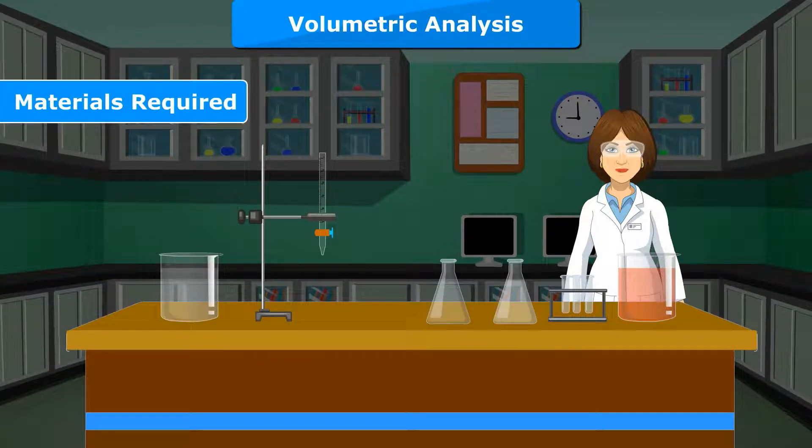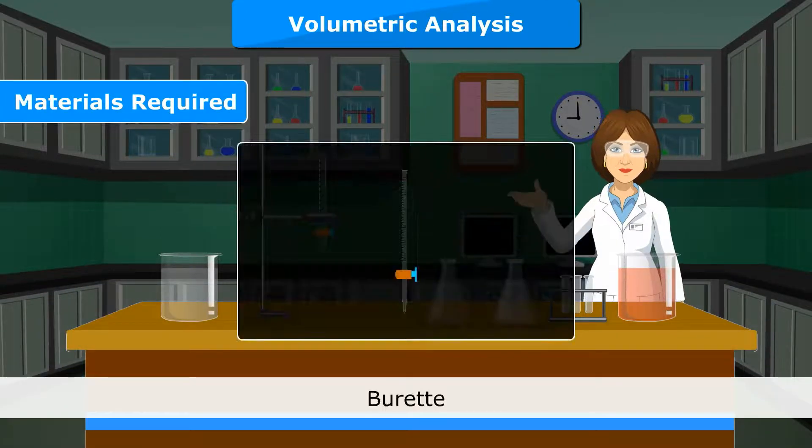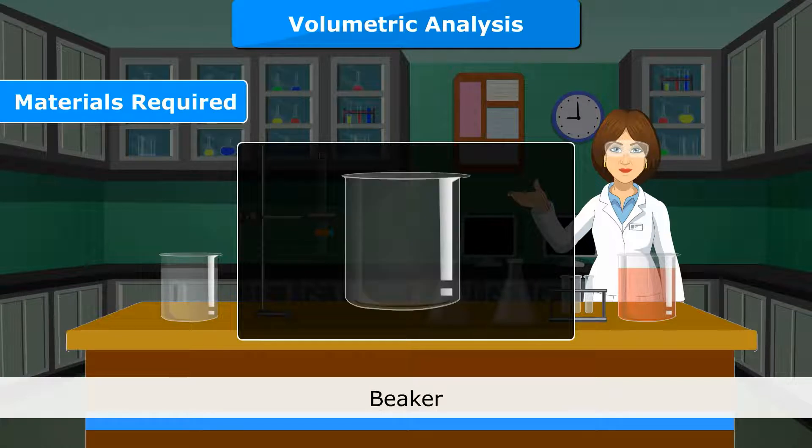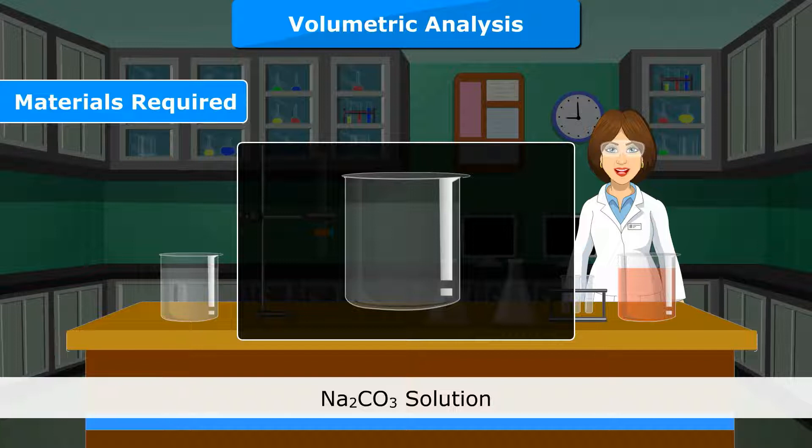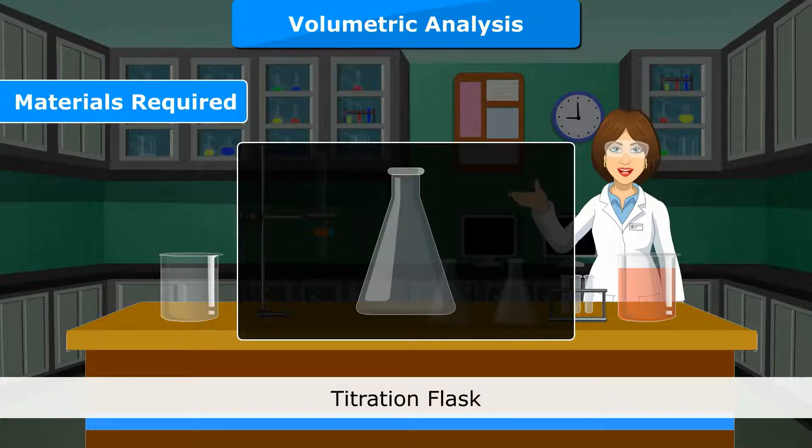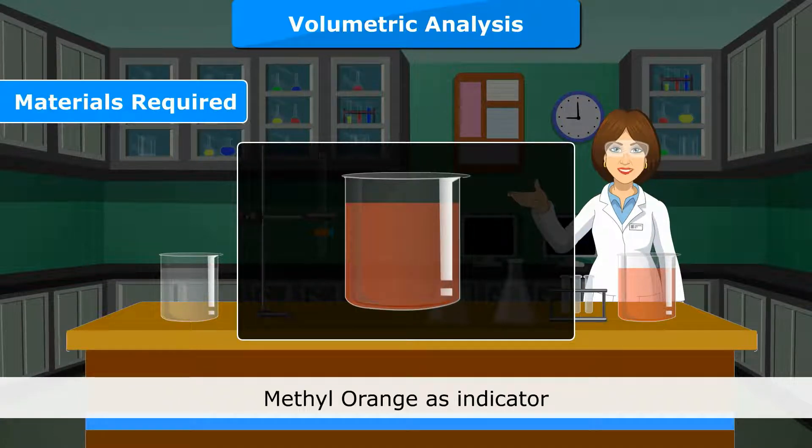Materials Required: Burette, pipette, beaker, 0.1 molar HCl, Na2CO3 solution, titration flask, methyl orange as indicator.